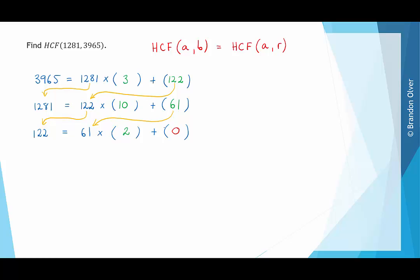And now that we've got a remainder of 0, this algorithm says that the highest common factor between 1,281 and 3,965 is the previous non-zero remainder. In this case, the highest common factor is 61, so we can write HCF(1,281, 3,965) equals 61. You can also check that on a calculator or using prime decomposition.